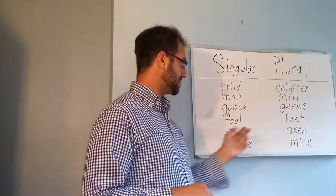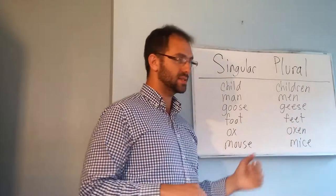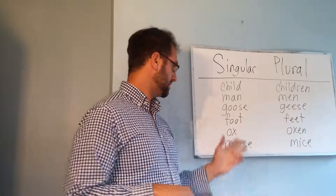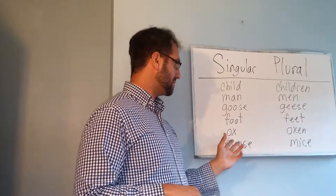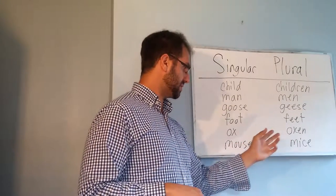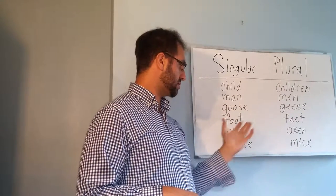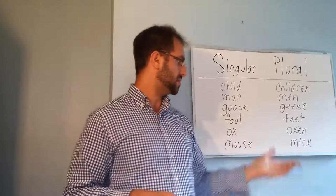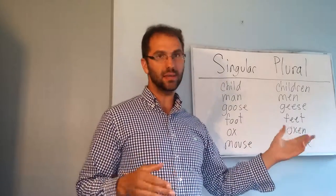Next we have ox, which becomes oxen — we add 'en' to the end. Mouse becomes mice; we change the spelling from m-o-u-s-e to m-i-c-e.